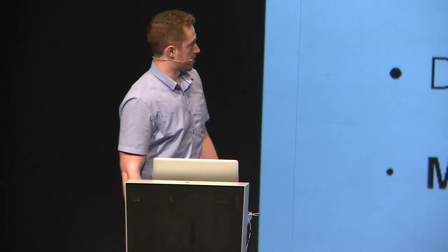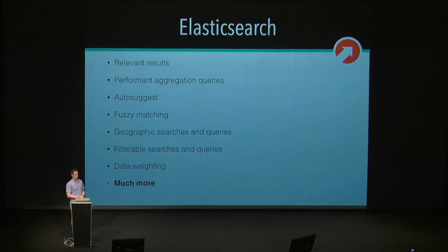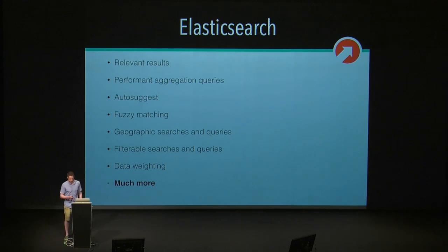With Elasticsearch, we can do a lot of cool stuff. We can handle relevancy with results, do performant aggregation queries, and do things like autosuggest where you type in the input box and it instantly suggests things to you, similar to what Google does. We can do fuzzy matching to handle things like misspellings in search. We can actually do geographic search. In general, we can do filterable searches and queries much more performantly. We can weight data. There are a ton of real-use applications for Elasticsearch and WordPress.